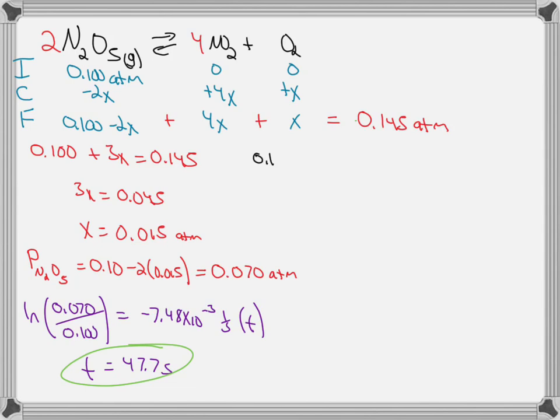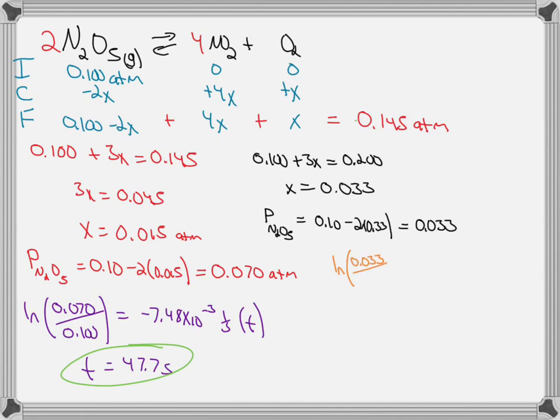If we want to solve for the time required for the total pressure to become 0.2 ATM, then we'll go back to this. Again the total pressure is 0.100 plus 3x. We'll set that equal to 0.2 and then solve for x at 0.033. Then the pressure of N2O5 will still be 0.1 minus 2x or 0.033. So now using the first order integrated rate law, we've got the natural log of the amount at time T of N2O5 at 0.033 ATM divided by the initial amount of 0.1 ATM will be equal to negative K multiplied by T and the time will be 147 seconds.